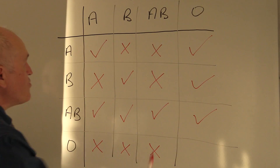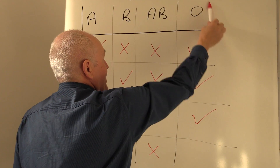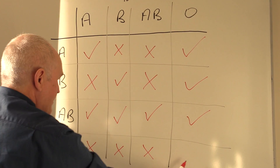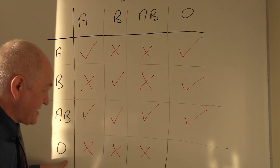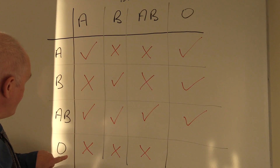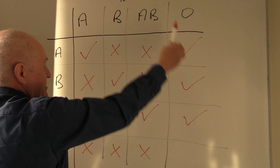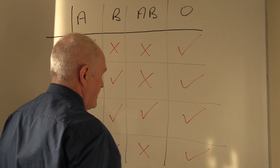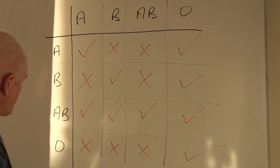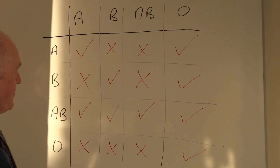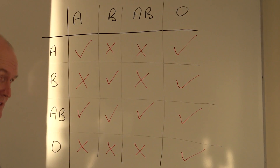O containing no antigens — even although there are A and B antibodies in the O recipient's plasma, that's still okay because there are no antigens on the group O blood to interact with the antibodies.